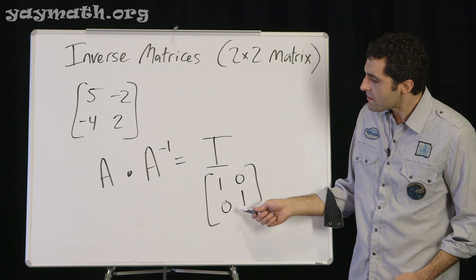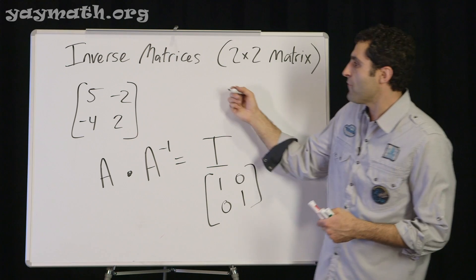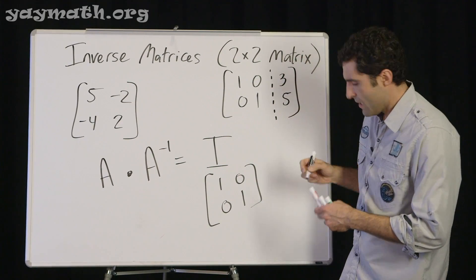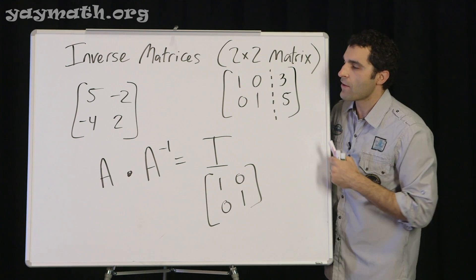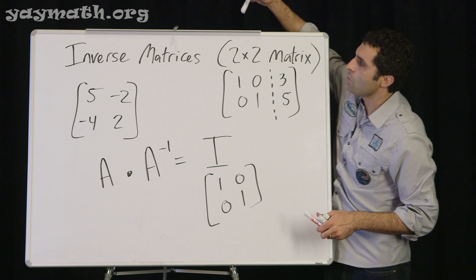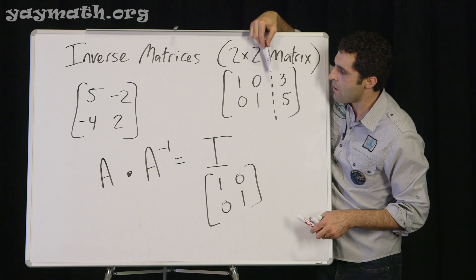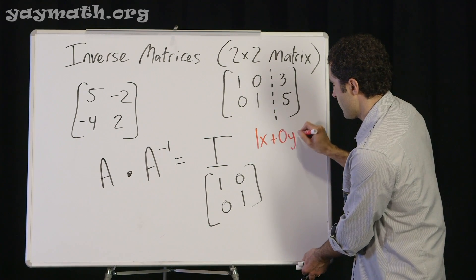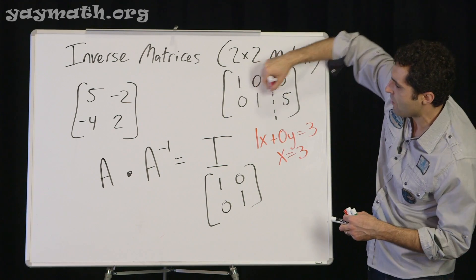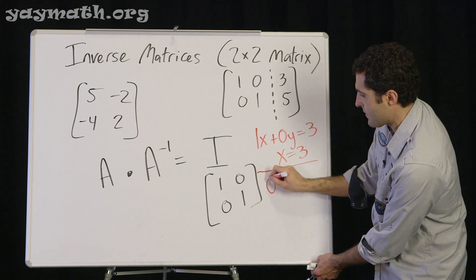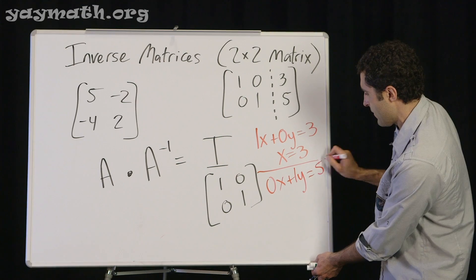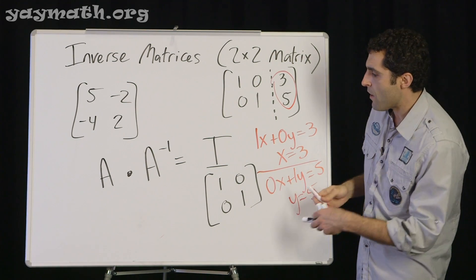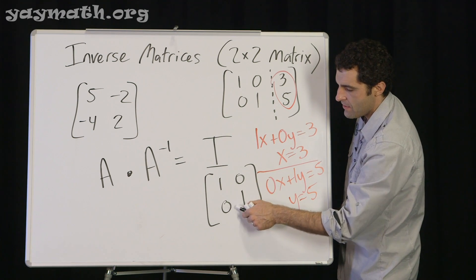The reason this is important is that resulting in the identity matrix means if you had something like this: identity matrix times a vector 3, 5, and we translate this into equations, this would mean our x and y are now solved. 1x plus 0y equals 3, so x equals 3. And 0x plus 1y equals 5, so y equals 5. Your solutions are (3, 5).